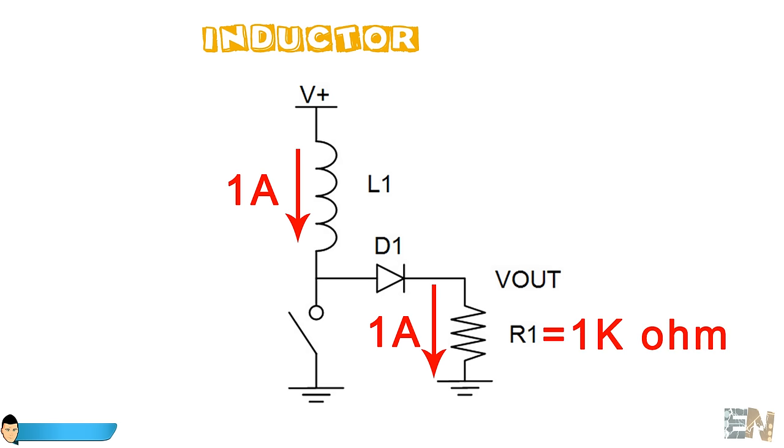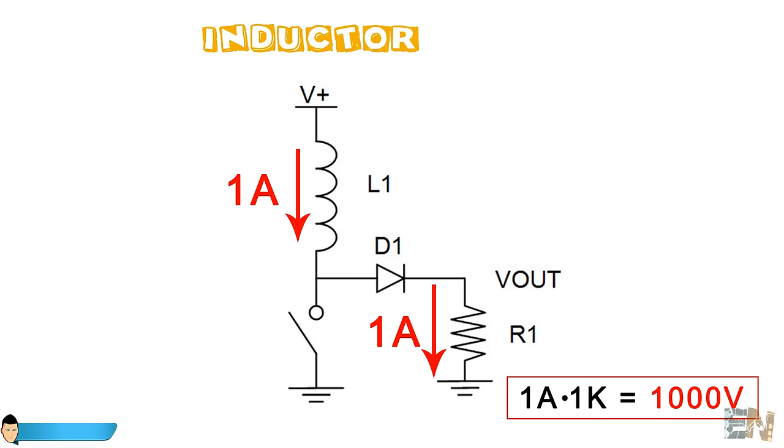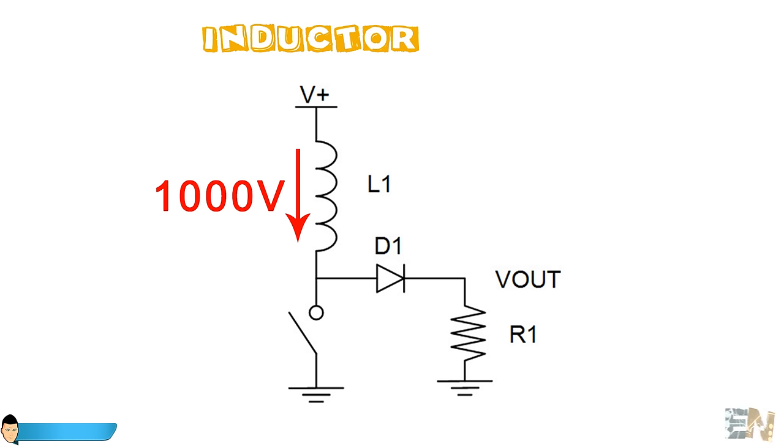And now the current will run through the R1 resistor. Now let's say that R1 is 1 kilo ohm. So 1 ampere of current multiplied by 1 kilo ohm is 1000 volts. That should be the generated voltage across the resistor in form of a spike that dissipates quickly. So just that easily, we created a 1 kilo volt spike.